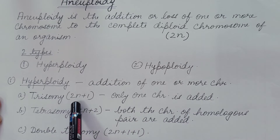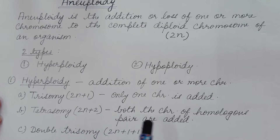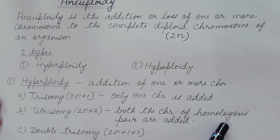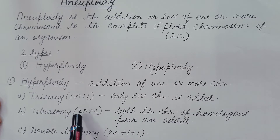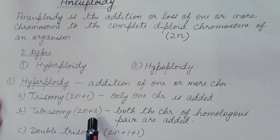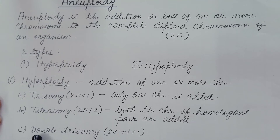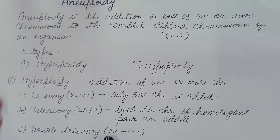Tetrasomy is written as 2n+2 — both chromosomes of a homologous pair are added. As we know, each chromosome in a diploid organism is present as a homologous pair, one paternal and one maternal. Double trisomy is written as 2n+1+1, meaning two chromosomes are added to the 2n, but these are not homologous chromosomes — two different chromosomes are added.